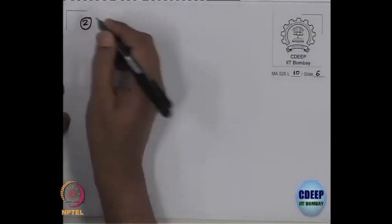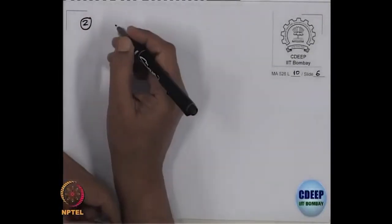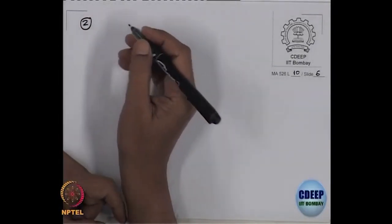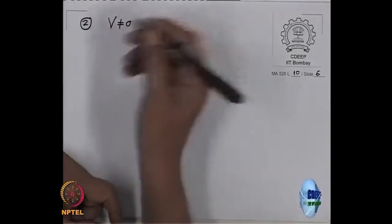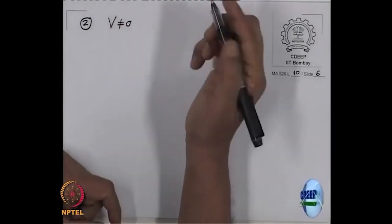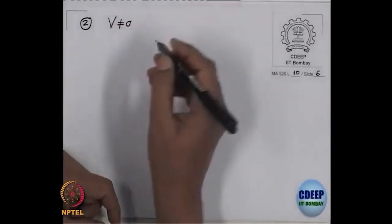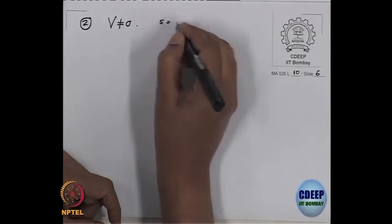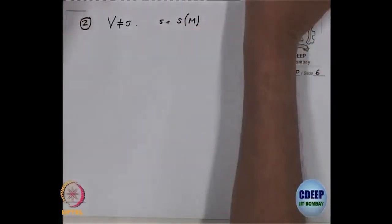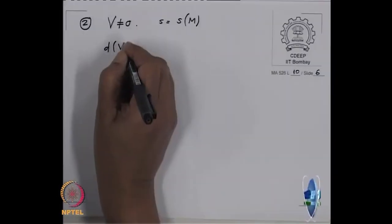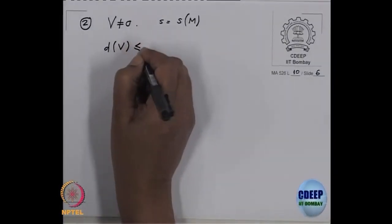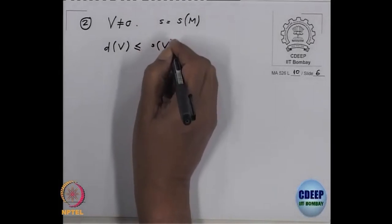Now, for the second one, we want to prove that — we may assume V is non-zero. Because if V is zero, then by convention both sides are minus one. The second inequality is: we want to prove that D of V is less than or equal to S of V.